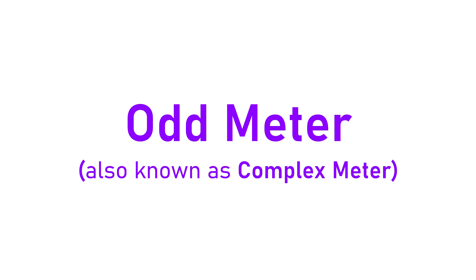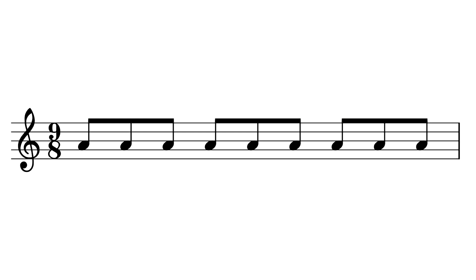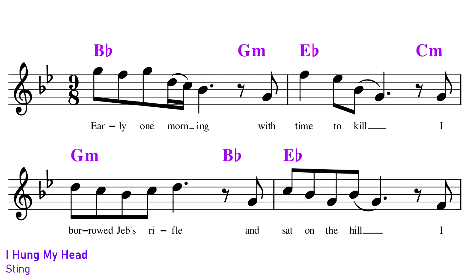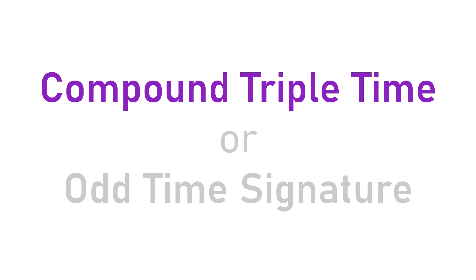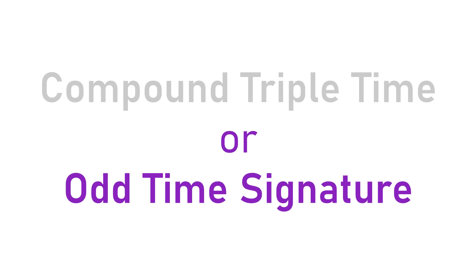In pop, rock, and jazz, if you come across a 9/8 time signature, it will instead usually mean that the song is in an odd or complex meter. Although in 9/8 we can group the nine eighth notes into three equally spaced beats, we can also group them into uneven groups to make 9/8 work as an odd time signature. For example, Sting's 'I Hung My Head' groups the 9/8 notes into a group of 4 and a group of 5.